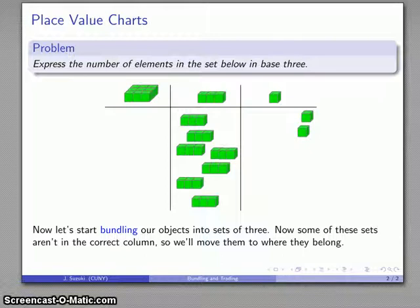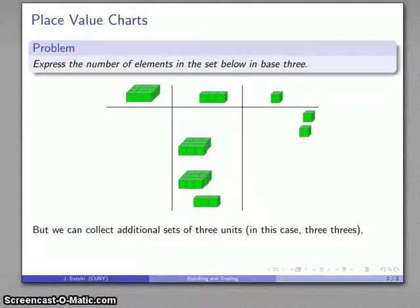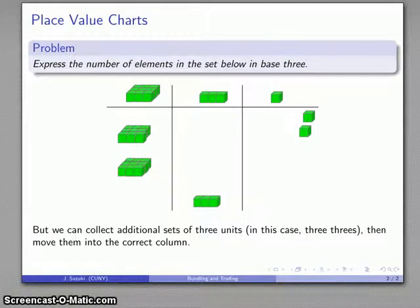Now I can repeat the process. Again, three of these will form one of these, so I'll bundle sets of three. Here's another set of three. Now I have new objects—these are in the wrong place, so I'll move them over where they belong. I could take three of these, except I don't have them, so I'm not able to do any more bundling, and everything is in the place where it should be.